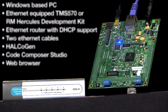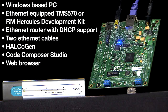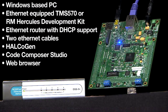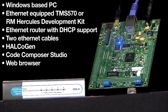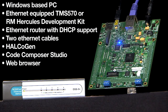For this exercise, we will need a Windows-based PC, an Ethernet-equipped TMS570 or RM Hercules Development Kit, an Ethernet router with DHCP support, and two Ethernet cables. We will also need Halcogen, Code Composer Studio, and a web browser.